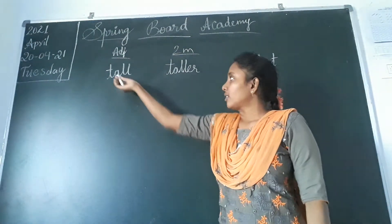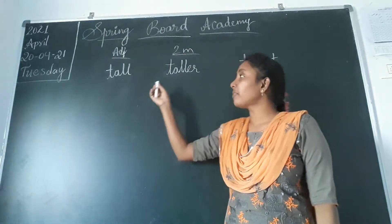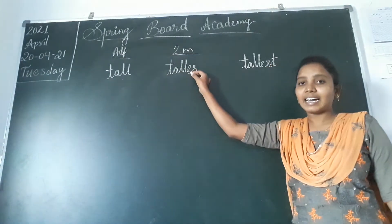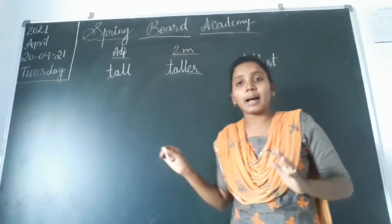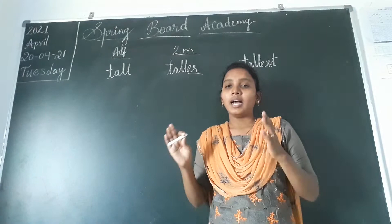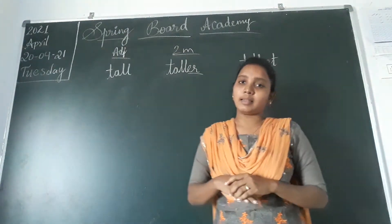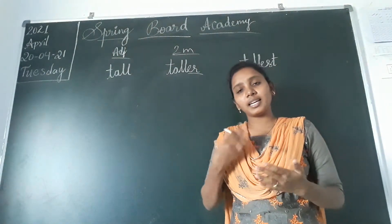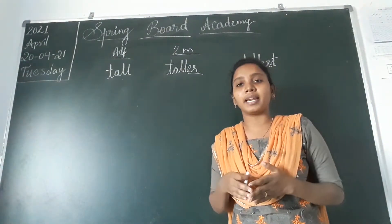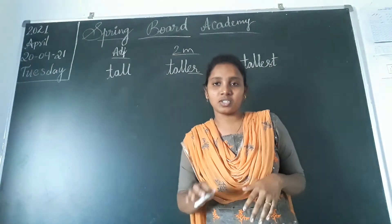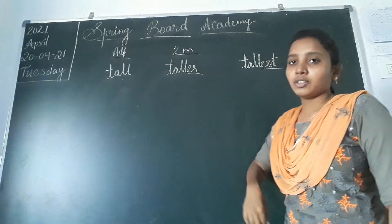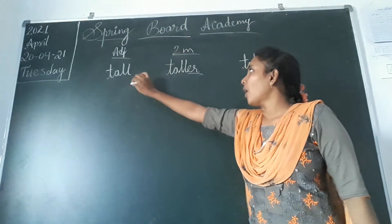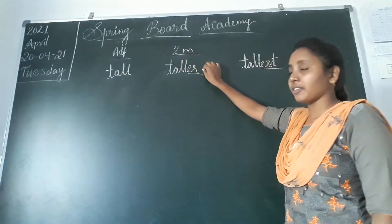Let us understand in which cases these forms apply. Tall is the base describing word — it is an adjective. When comparing two persons, we add -ER to get 'taller.' When comparing three or more than three, we add -EST to get 'tallest.' So: tall — base word; add -ER for two; add -EST for three or more.